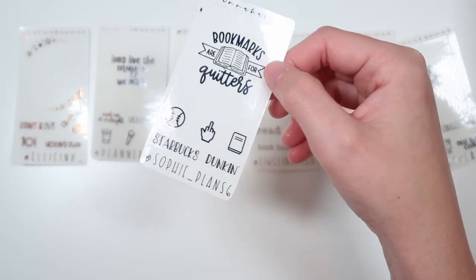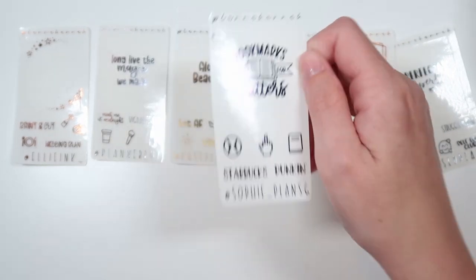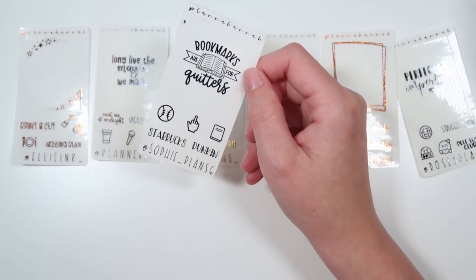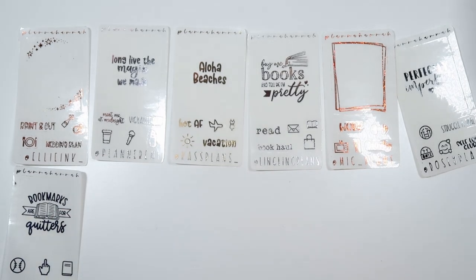Then we have Sophia from Sophia underscore plan six. This is in navy. And her quote says bookmarks are for quitters. And then we have Starbucks and Dunkin', and a baseball, a middle finger, and a book.